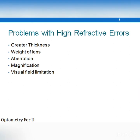The problems usually encountered by patients when wearing high-powered lenses are greater thickness of the lens, increased weight of the lens, and increased aberration from the lens surface. Apart from that, there is also magnification of the image and a limitation in the visual field.